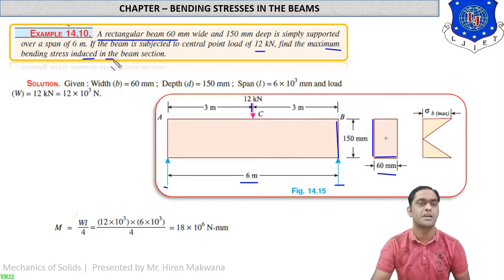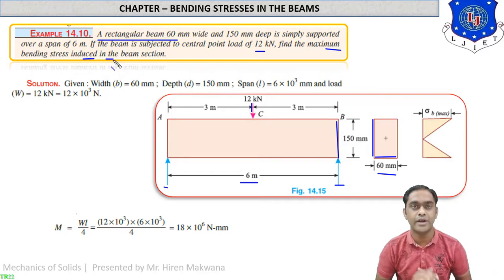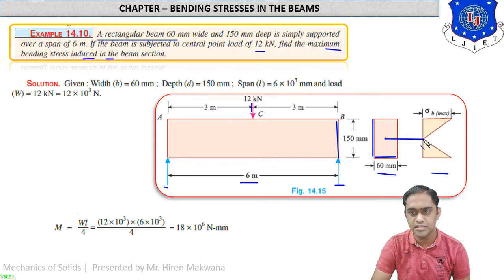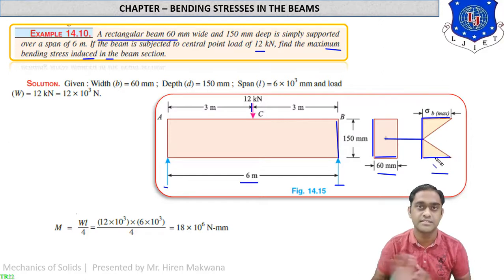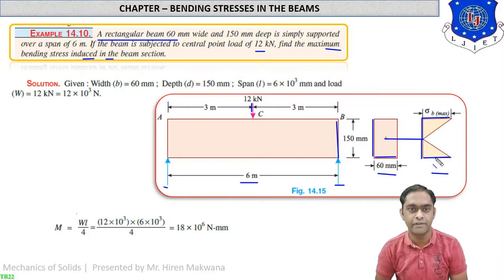Our target is to find the maximum bending stress in the section. From the bending stress distribution diagram, at the neutral axis the bending stress is zero. The maximum stress sigma occurs at the uppermost and lowermost layers. Since a rectangular section is symmetrical, the uppermost and lowermost bending stresses have equal values.